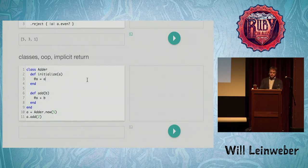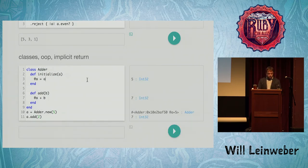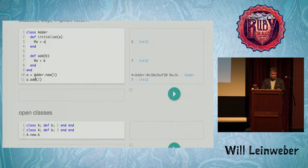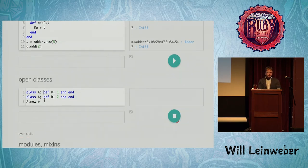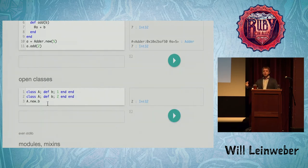The classes, object-oriented programming, implicitly returning methods — this is all very similar. Instance variables. Also, classes are open, and so whatever the last definition is overwrites, same as Ruby.